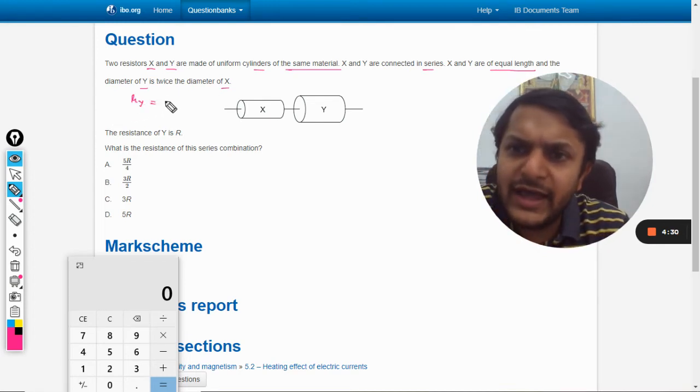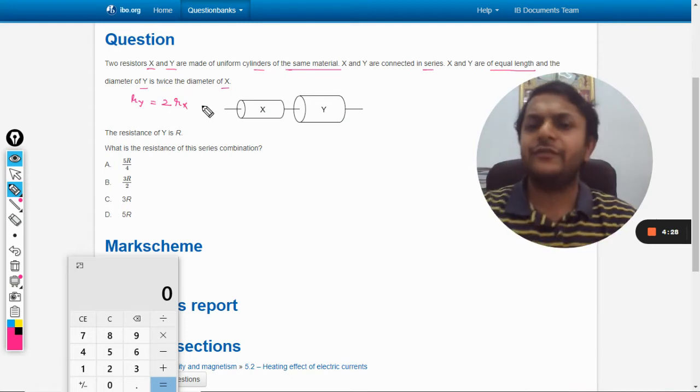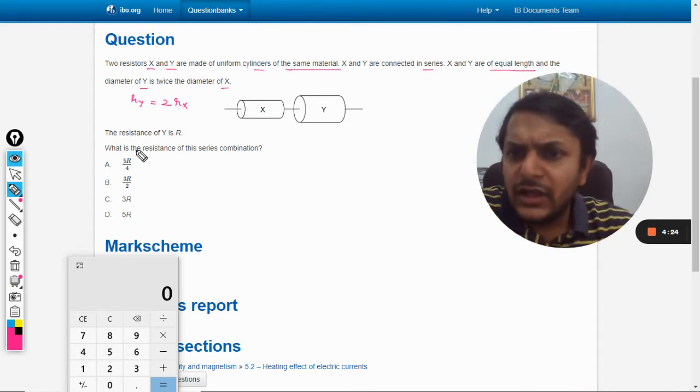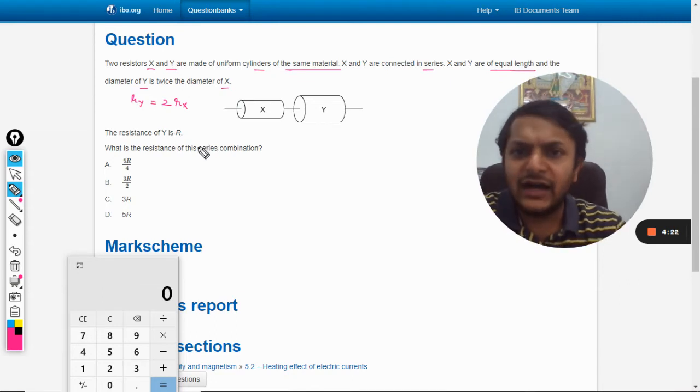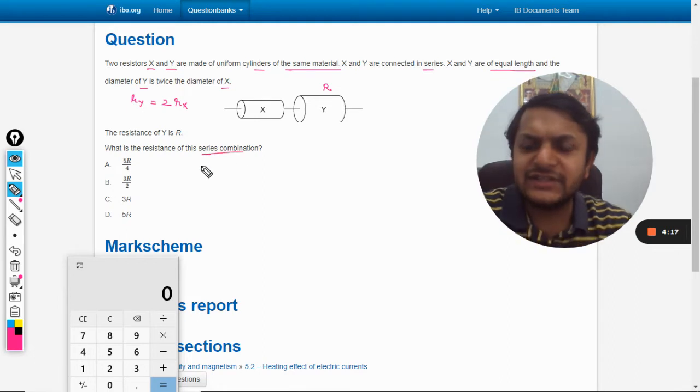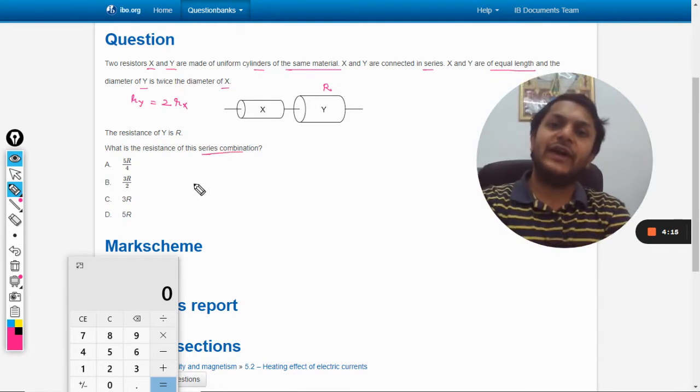The radius of y is twice the radius of x. The resistance of y is r. We need to find the resistance of x and then the resistance of the series combination.